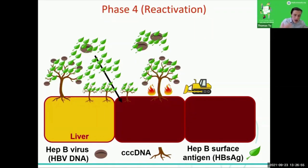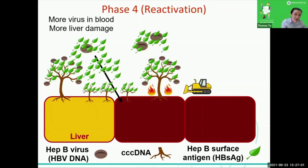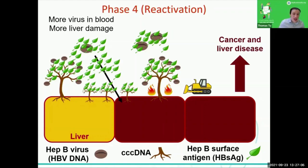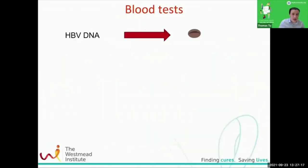In this phase, you have a lot more virus in the blood and a lot more liver damage. That becomes a problem because that inflammation is linked to liver cancer and liver disease, and we're trying to get rid of that.